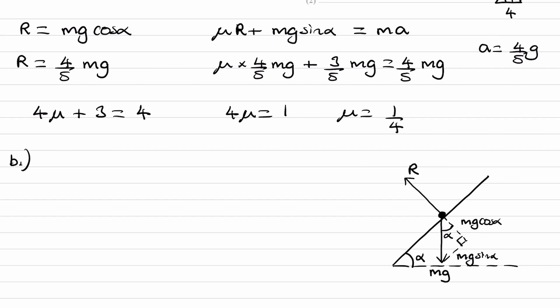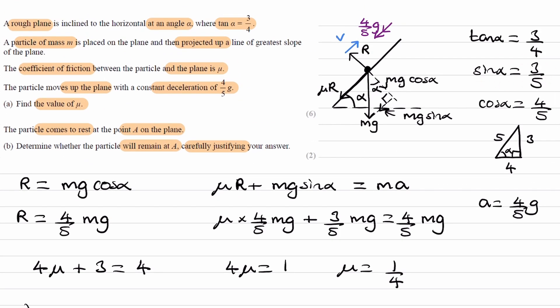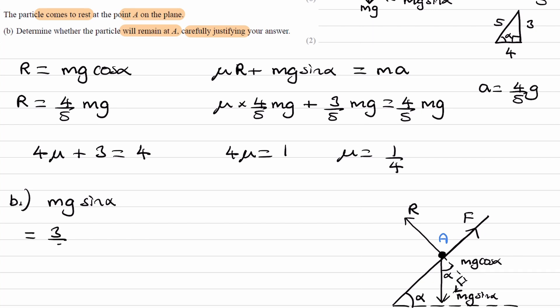On the force diagram, the weight and normal reaction force remain the same. The frictional force now acts up the slope. The component of weight mg sin alpha wants to pull the object down the slope and friction opposes that. We compare the sizes of those two forces: the component of weight going down the slope is mg sin alpha, and sin alpha is 3 over 5, giving 3 fifths mg.